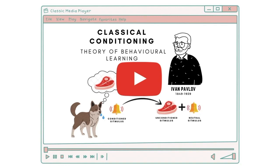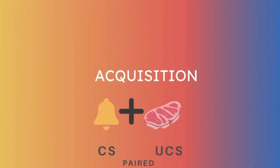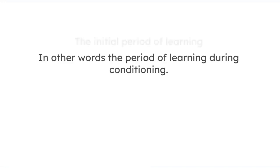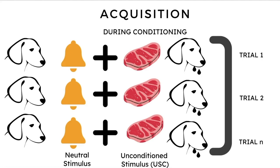Having said that, let's move on to what we cover in today's video. Acquisition is the initial learning period when we are acquiring the associations between the neutral and the unconditioned stimulus. This is the process that occurs during the repeated presentation of the neutral and the unconditioned stimulus during the conditioning phase, which allows us to acquire and develop those associations.